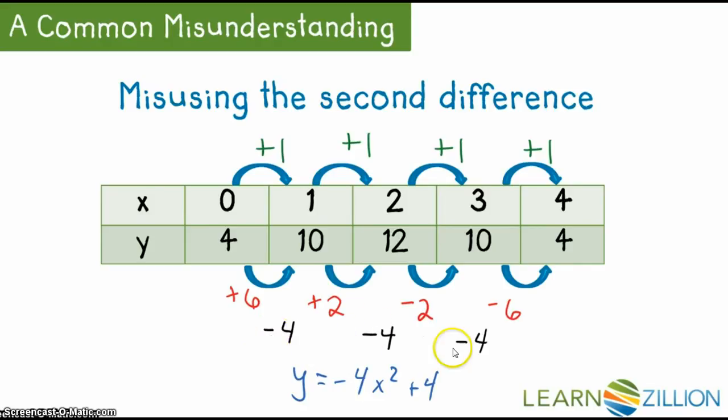the pattern is, to get your a value here, if you take negative 4 and divide that by 2, you just have to memorize it. It's just a pattern that occurs for creating the equation. So the second difference, which is negative 4, if you divide it by 2, which would give you negative 2 for a, you would get your original answer.